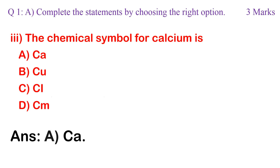Question 3: The chemical symbol for calcium is: a. Ca, b. Cu, c. Ci, d. centimeter. Correct option is a. Ca.